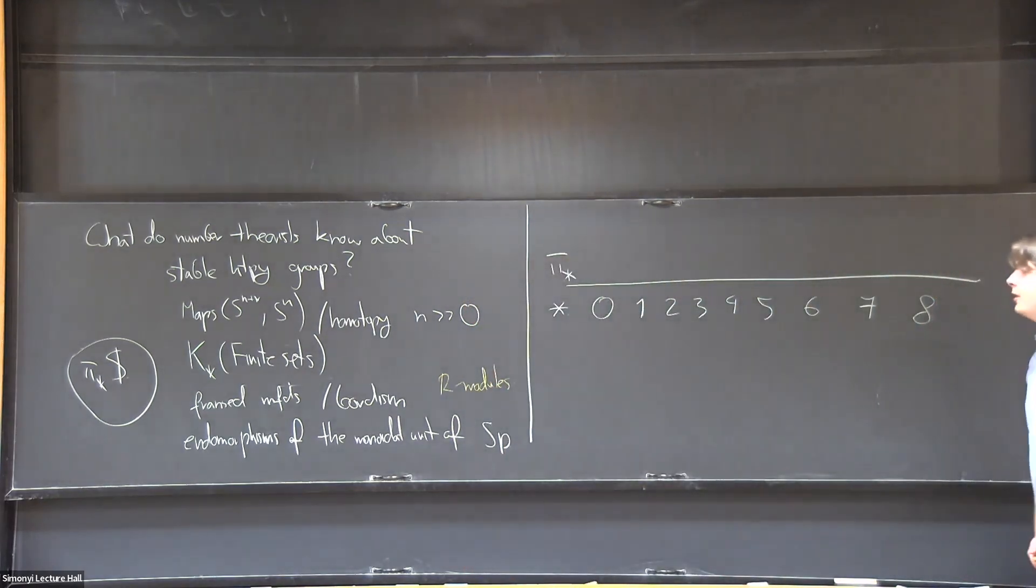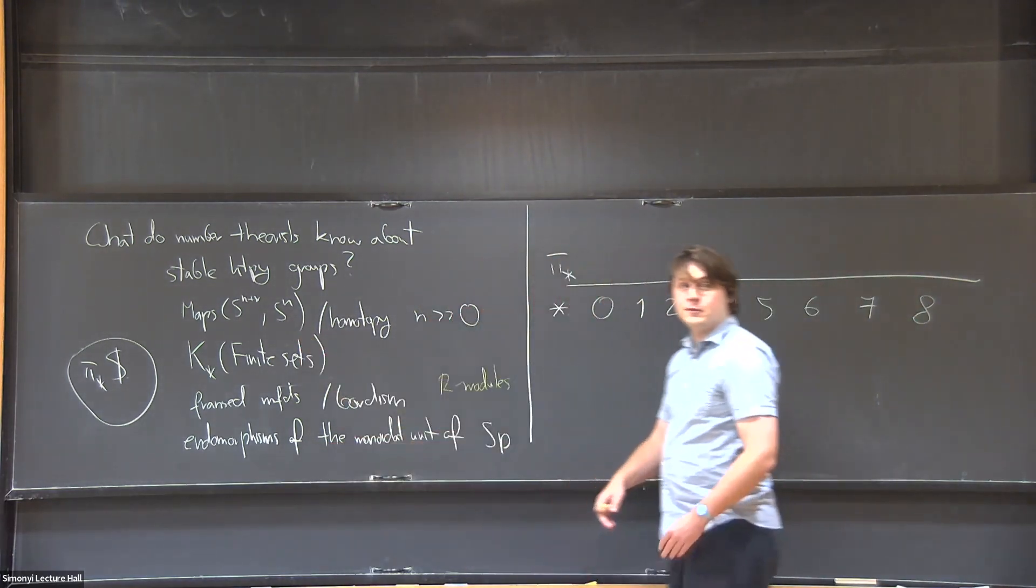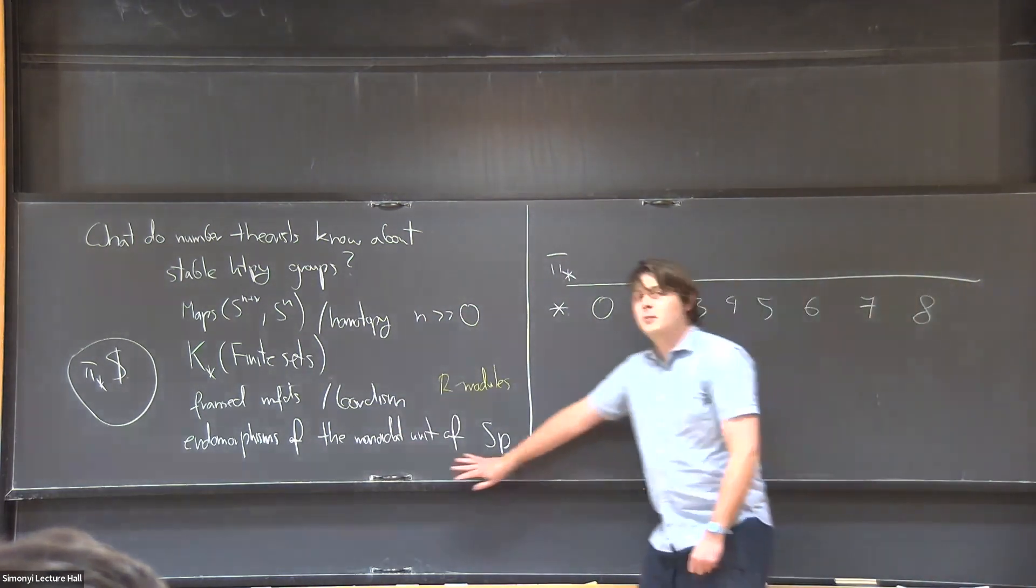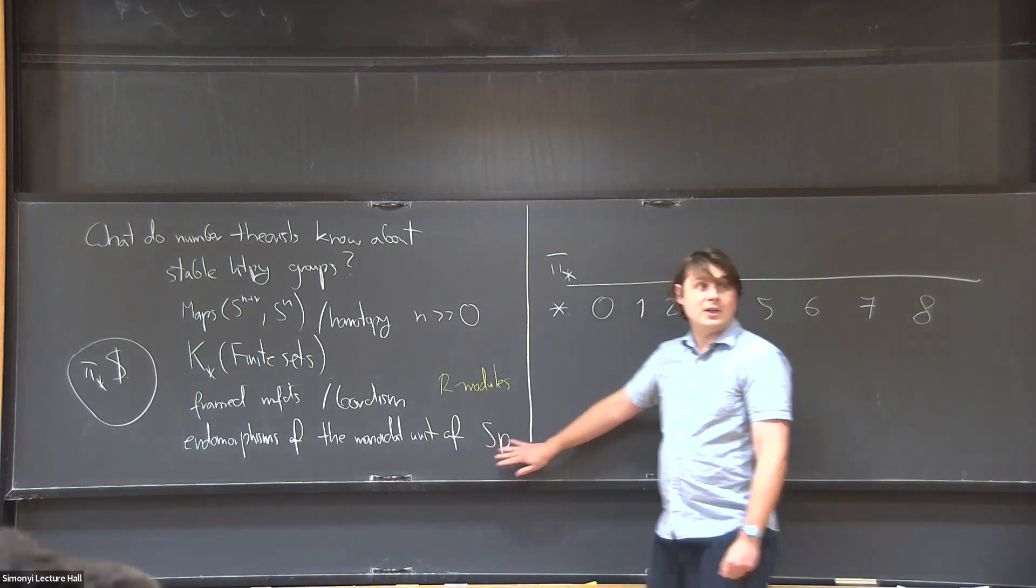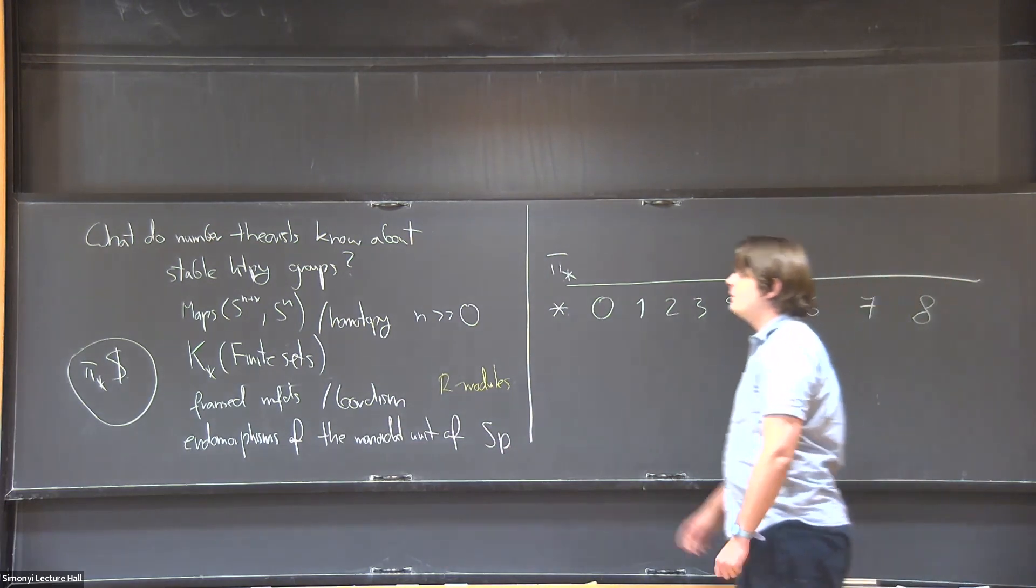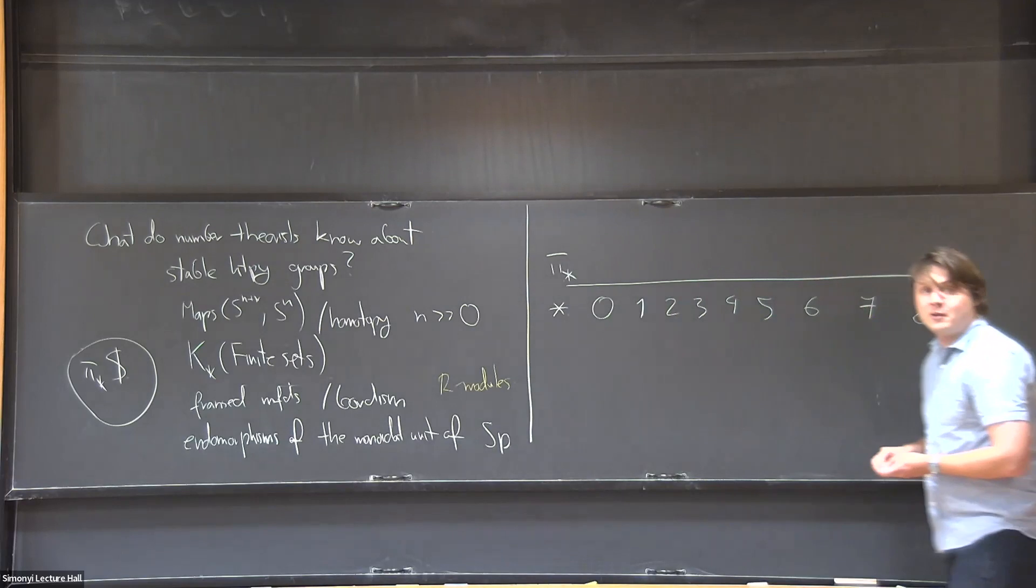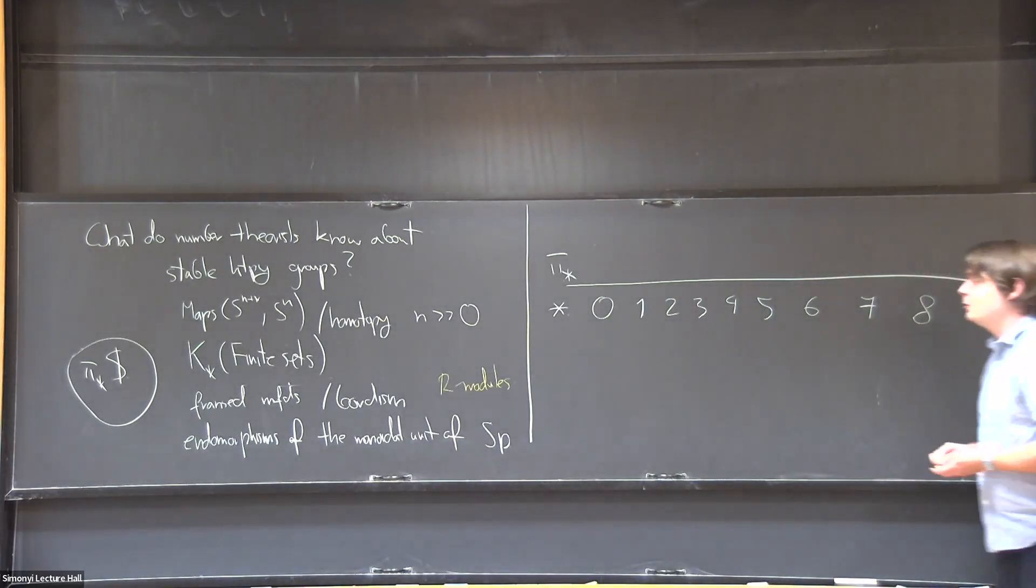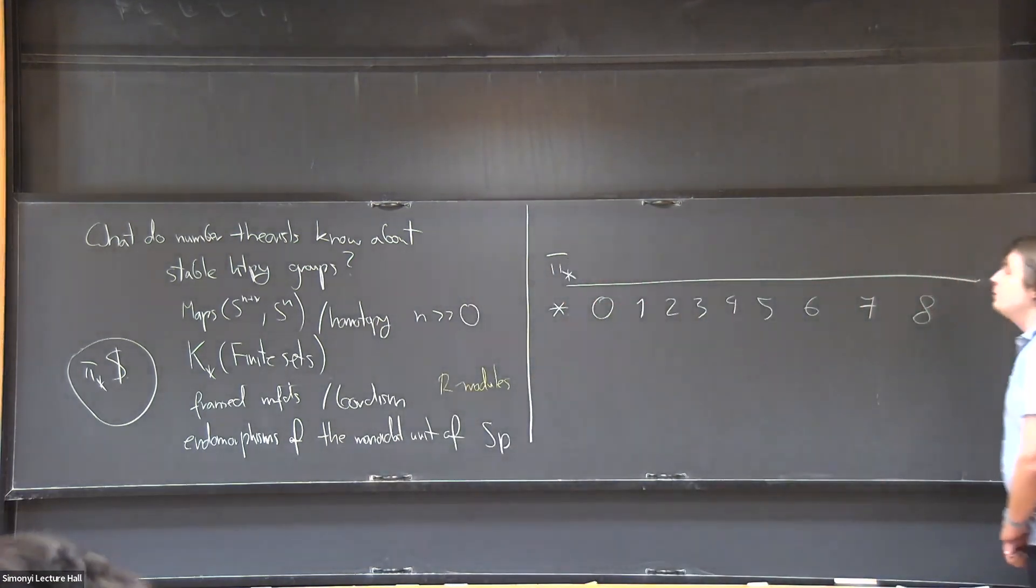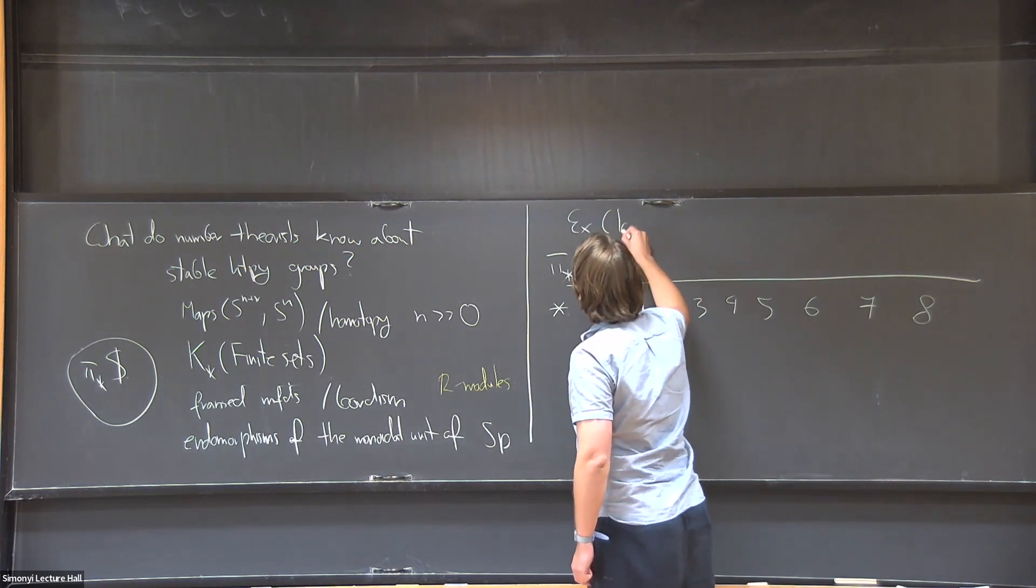It's an additive category and the sphere forms the monoidal unit, and the homotopy groups are the endomorphisms of the monoidal unit. So this brings the problem more into the realm of something like algebraic geometry. In fact, most of the stable homotopy theory is much closer to algebraic geometry and, as I will see, number theory than it is to low-dimensional topology.